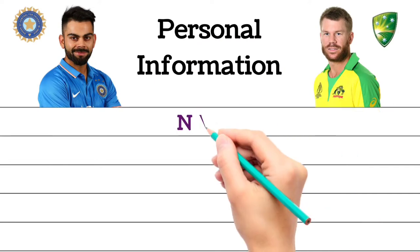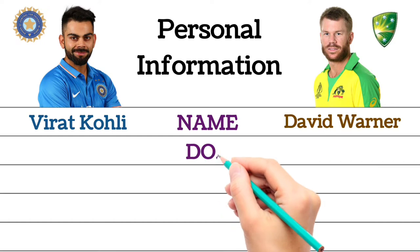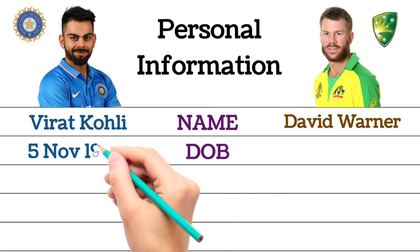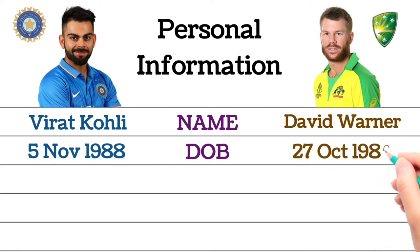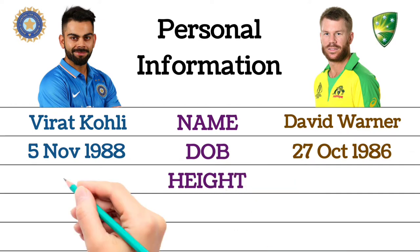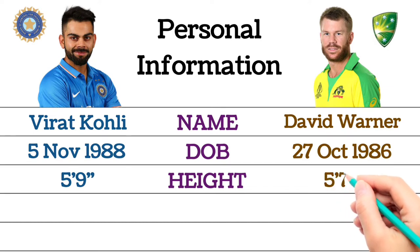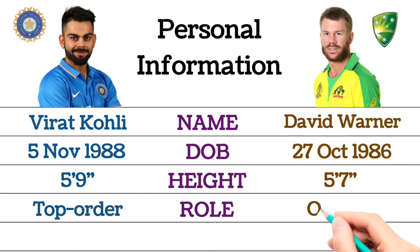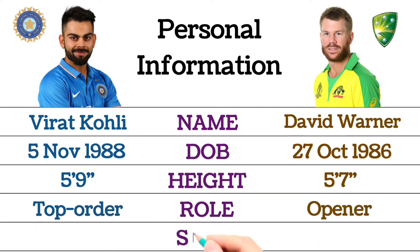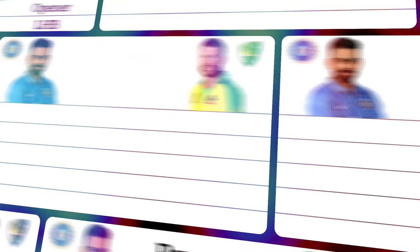Personal information: Name — Virat Kohli vs David Warner. Date of birth: Virat Kohli, 5th of November 1988; David Warner, 27th of October 1986. Height: Virat Kohli 5 feet 9 inches, David Warner 5 feet 7 inches. Player role: Virat Kohli top-order batsman, David Warner opening batsman. Batting style: Virat Kohli right-handed, David Warner left-handed.